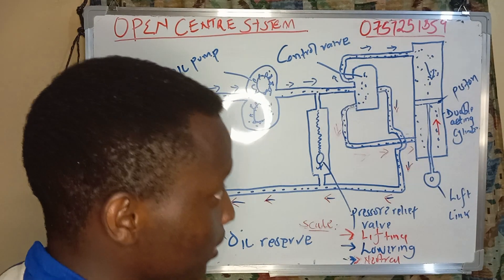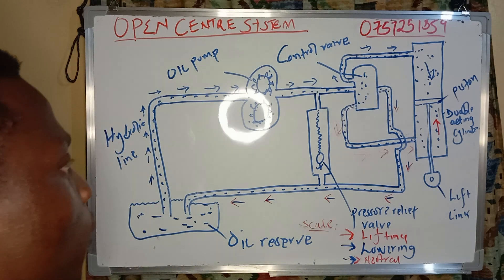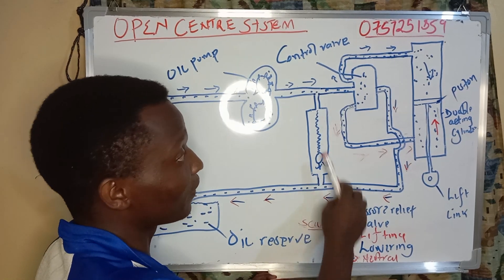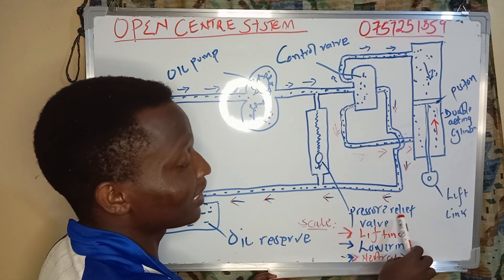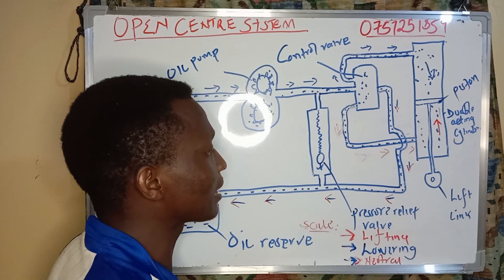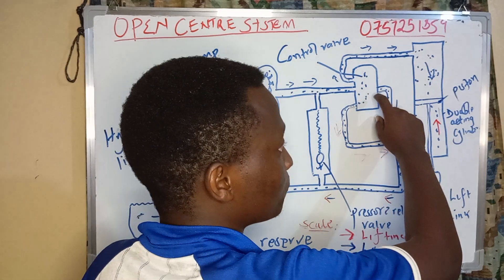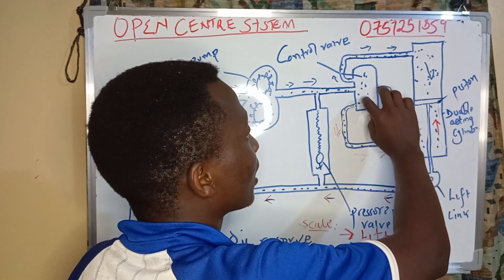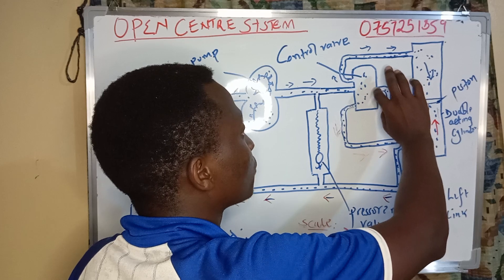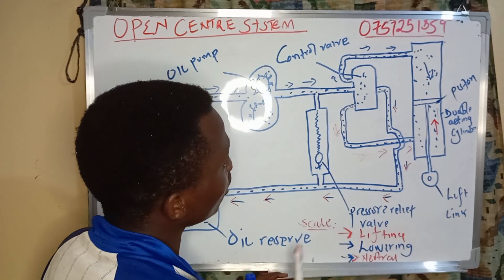Now the question is: what about when the tractor is at a neutral point? We have a pressure relief valve. The function of a pressure relief valve is to ensure that the pressure forced into the control valve is kept at low pressure. That will force the oil into the channel and it will come out here at the control valve.